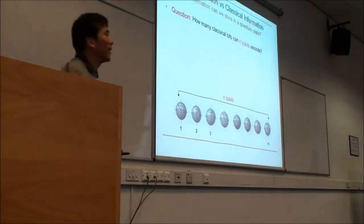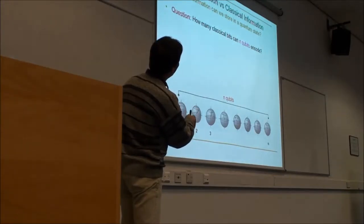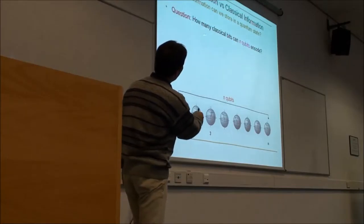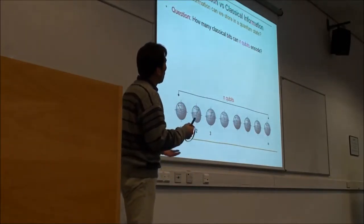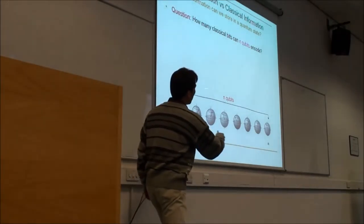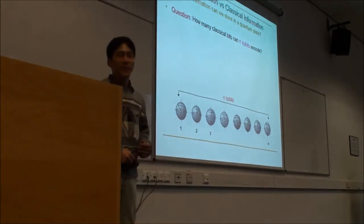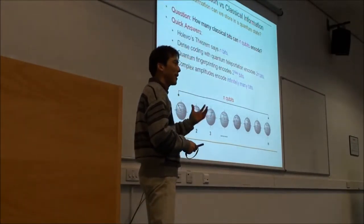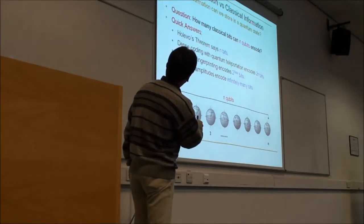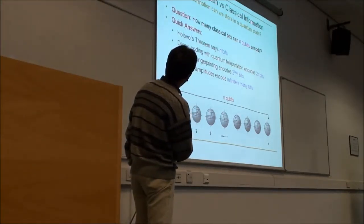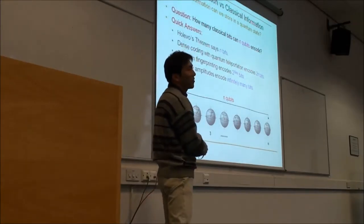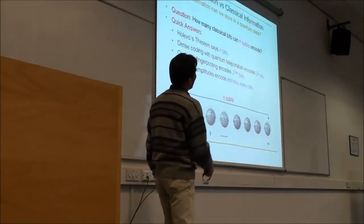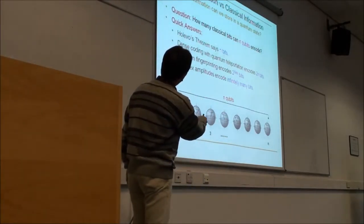Now I want to ask: how many classical bits can be encoded into n qubits? The answer depends on the situation. One famous theorem in quantum information theory says only n bits — we gain nothing. n classical bits can be encoded into just n qubits.